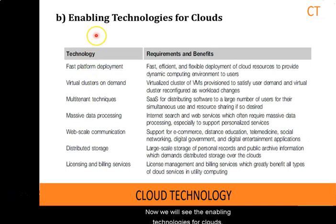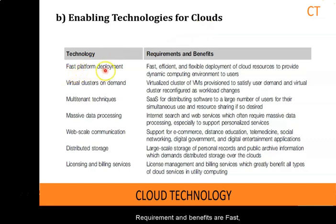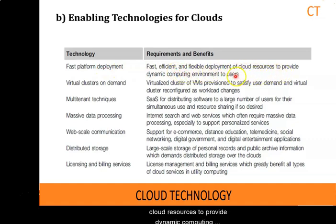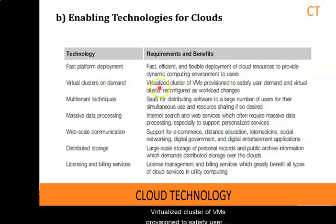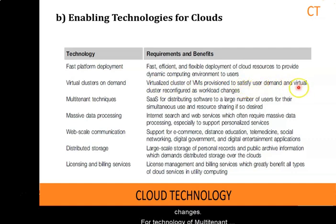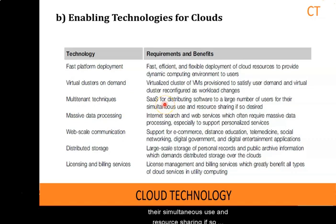Now we will see the enabling technologies for clouds. For the technology of fast platform deployment, the recommended benefits are fast, efficient, and flexible deployment of cloud resources to provide a dynamic computing environment to users. For the technology of virtual clusters on demand, the recommended benefits are virtualized clusters of VMs provisioned to satisfy user demand, with virtual clusters reconfigured as workload changes. For the technology of multi-tenancy techniques, the recommended benefits are software as a service for distributing software to a large number of users for their simultaneous use and resource sharing.